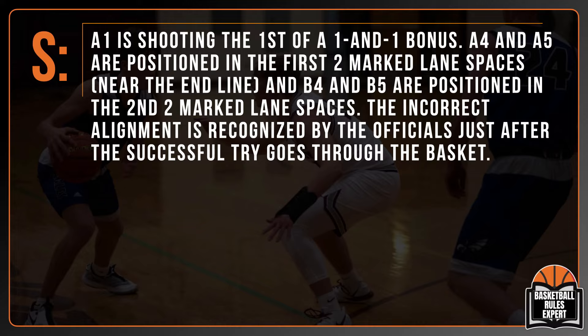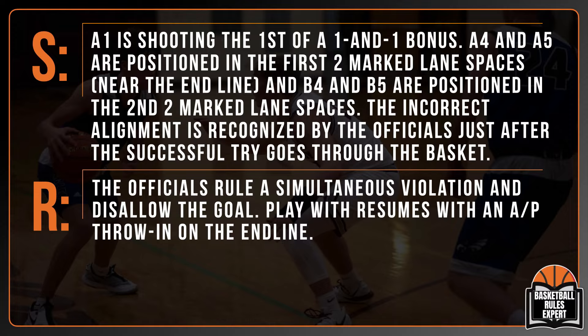Scenario 3: A1 is shooting the first of a one-and-one bonus. A4 and A5 are positioned in the first two marked lane spaces near the end line, and B4 and B5 are positioned in the second two marked lane spaces — the incorrect alignment. The officials recognize the error just after the successful try goes through the basket. They rule a simultaneous violation and disallow the goal, resuming play with an alternating possession throw-in on the end line. Were the officials correct?